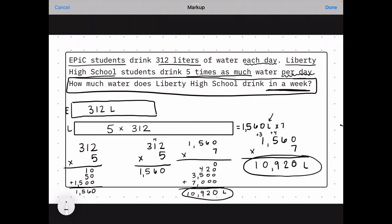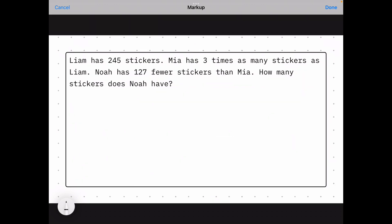Moving on to the next problem. We have Liam has 245 stickers, Mia has three times as many stickers as Liam, Noah has 127 fewer stickers than Mia. How many stickers does Noah have? Go back through and mark up our problem.